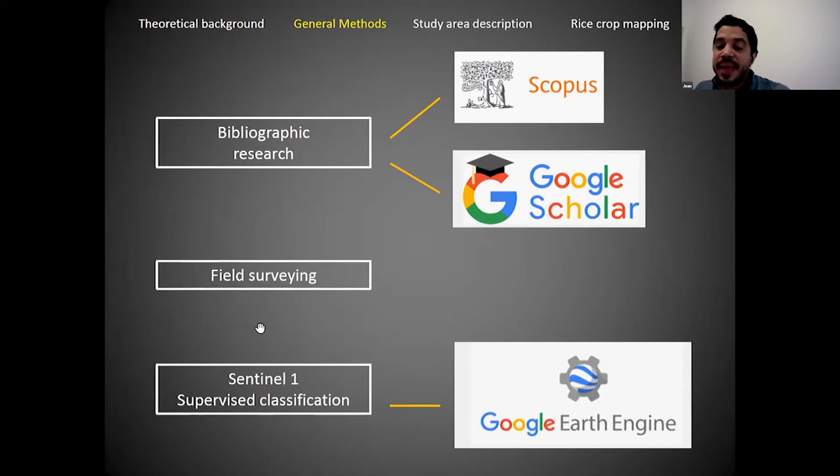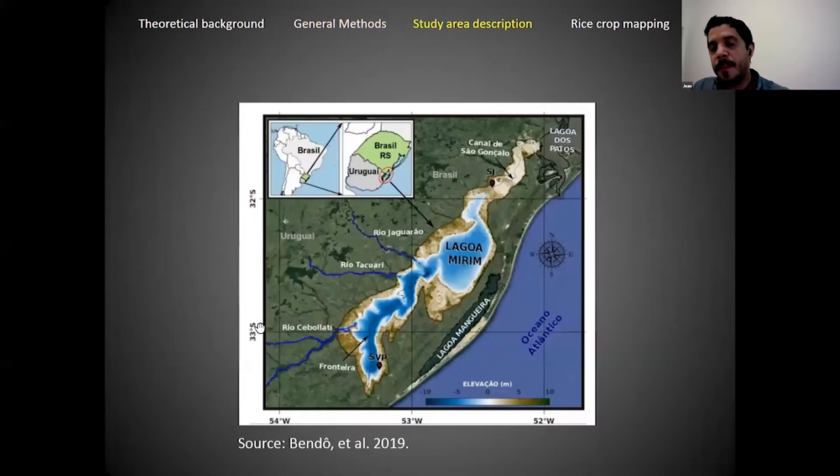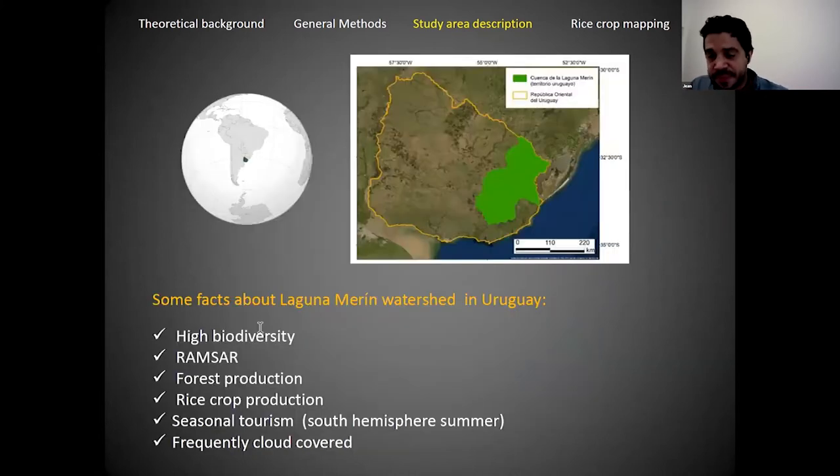Let's talk about our study area. Our study area is Laguna Merin, an international watershed. It has parts in two countries: southern Brazil and northeastern Uruguay. In this case, we are interested in the Uruguayan side.